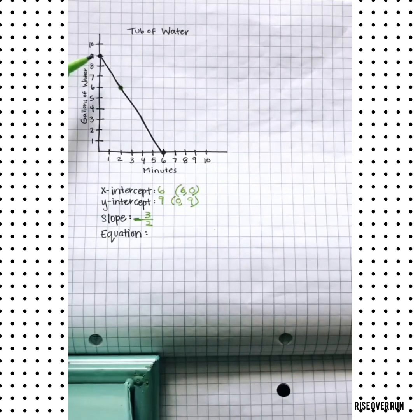Then our slope of negative 3 over 2, what does that mean? That means that this tub of water is losing 3 gallons every 2 minutes, or 1½ gallons every 1 minute. That's the rate, that will be important to understand if any word problems have questions.